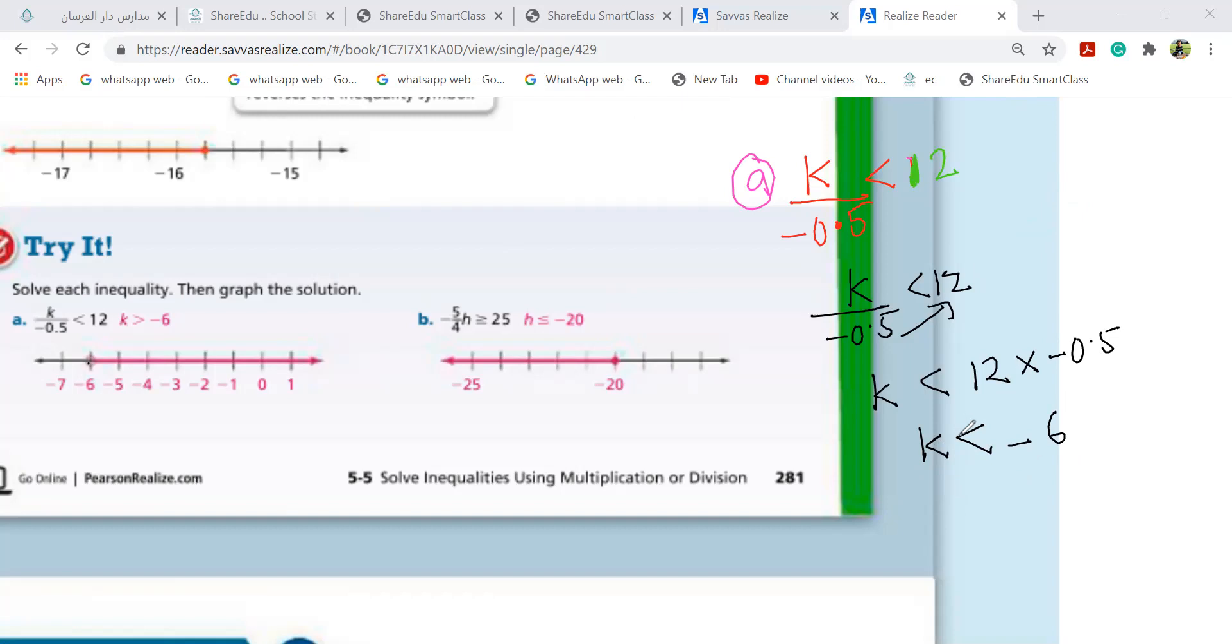Because of the sign. Because this minus came there, the sign changes to greater than. And remain minus. That's why it's greater than. You will teach you why it became this way. Because of the sign.